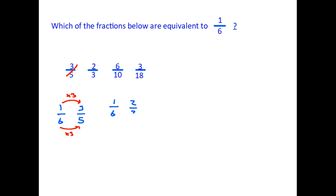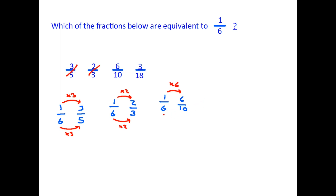Let's try the second one: we're comparing one sixth with two thirds. To get from one to two on top, it has been multiplied by two, therefore we have to multiply the bottom by two: six times two is twelve — it isn't three, so that one doesn't work either. Let's try the third: one sixth compared with six tenths. The top number has gone from one to six, multiplied by six, so we should multiply the bottom by six: six times six is thirty-six — it is not ten, so that one is also wrong.